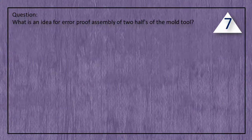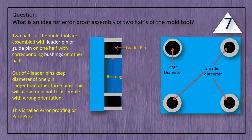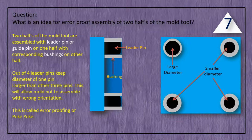Question: What is the idea for error-proof assembly of two halves of the mold tool? Answer: Two halves of the mold tool are assembled with leader pins or guide pins on one half, with corresponding bushings on the other half. Out of four leader pins, keep the diameter of one pin larger than the other three pins. This will prevent the mold from being assembled with the wrong orientation. This is called error proofing — a poka-yoke.